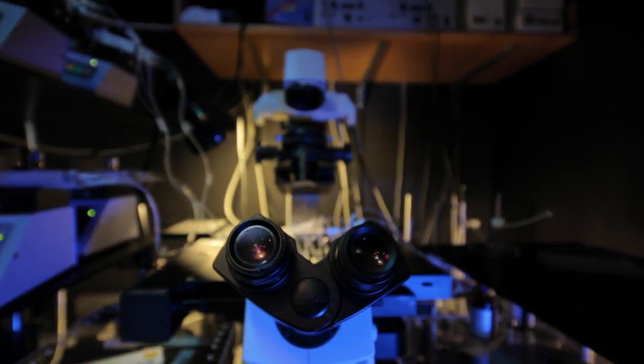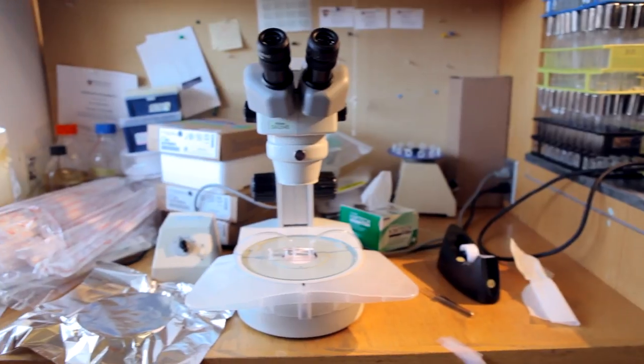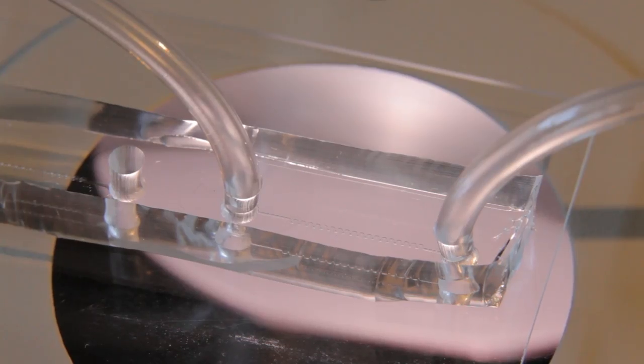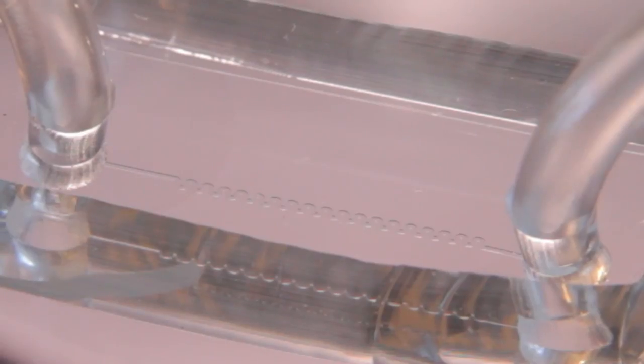Microfluidics is a method for studying the motion of liquids in pipes and channels. In this case, the channels are comparable to the diameter of a human hair. This experimental approach has proven very useful because the materials are transparent, and consequently, we can use them under a microscope.